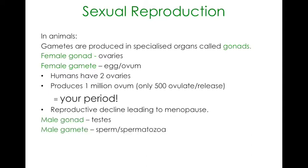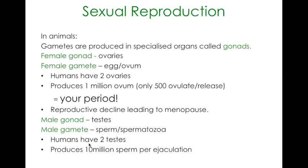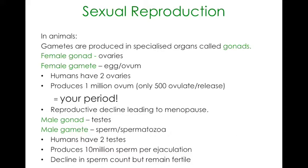Males have testes for gonads and the gamete is the sperm, otherwise known as spermatozoa. Humans have two testes and unlike females - who have a set number of about one million eggs - males will produce roughly 10 million sperm per ejaculation. They need that many because the sperm have to travel into the female vagina and reach the egg to reproduce, and many will die in that process. There is a decline in sperm count as males grow older, but men generally remain fertile throughout their lifetime.